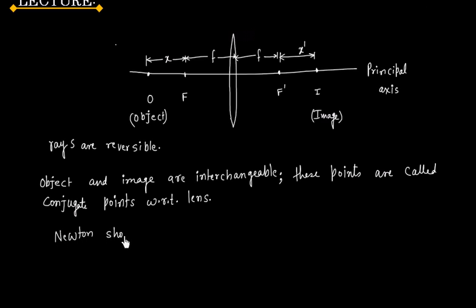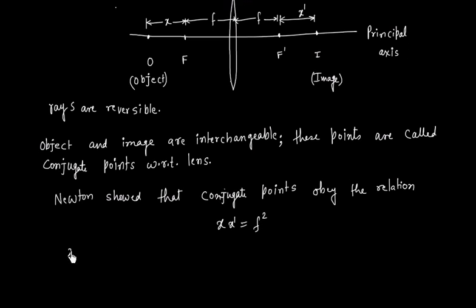Newton showed that conjugate points obey the relationship X times X dash equals F squared, where X and X dash are the respective distances from the focus on the same side of the lens.